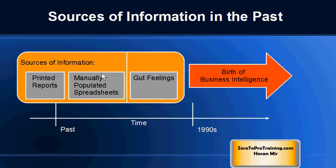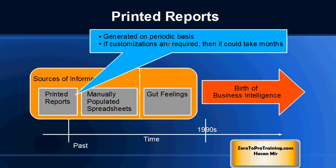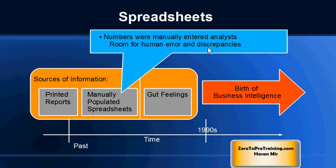Most of the information came in the shape of reports and spreadsheets. Reports were not available on demand like they are today — they would mostly be printed periodically on a set schedule. If those scheduled reports didn't meet your requirements, you would have to wait weeks or even months for IT to create a custom report for you.